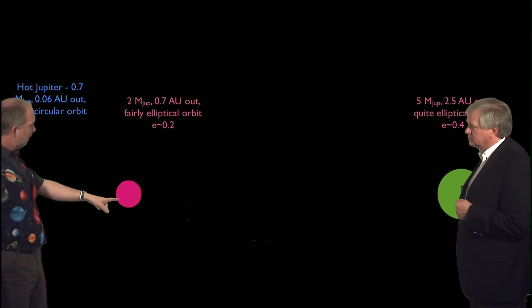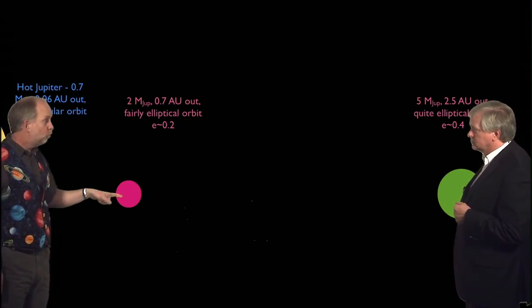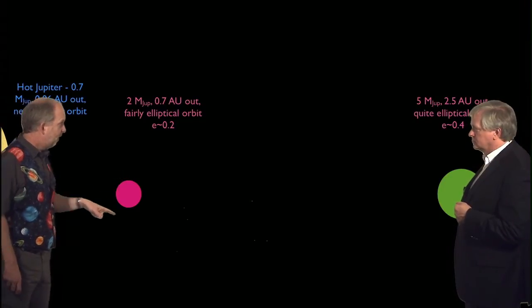And the second one's much further out, 0.7 astronomical units, so about where Venus is in our solar system. And it's two times the mass of Jupiter, so much bigger. And then right over there...